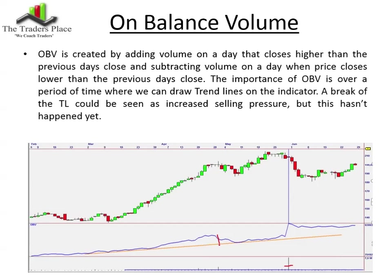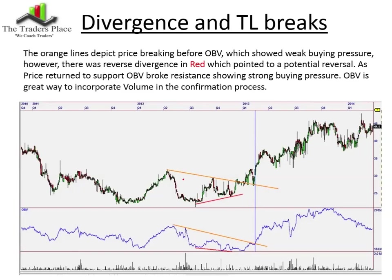On balance volume, when it comes to divergence and trend line breaks: the orange lines depict price breaking before on balance volume. Here we can see the price breaking above the trend line, and on balance volume at that same time is still trending down. The on balance volume then gave us reverse divergence — we had the price making a higher low while OBV was still making lower lows. That would be called a slingshot if it was on a MACD. The idea is that there is still quite a bit of volume going on the down days, but on the higher closes, not so much volume, but the price is moving.